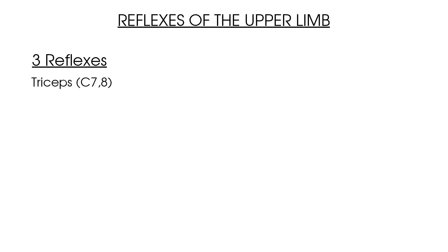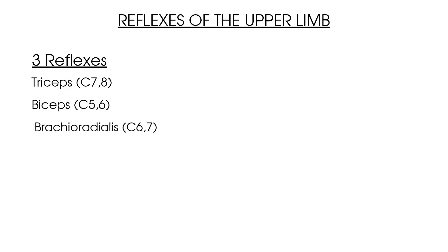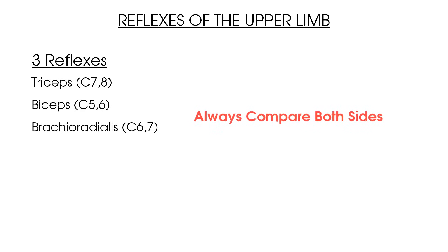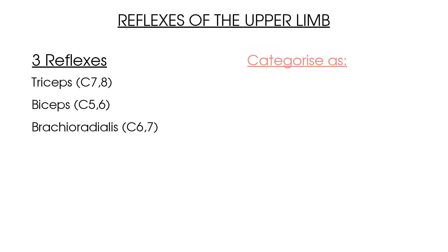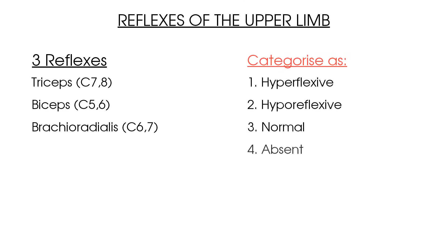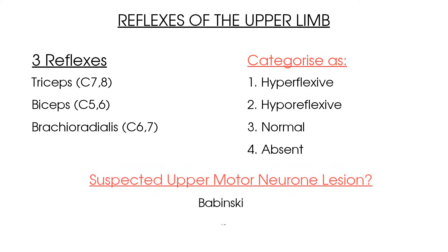To summarise this video on the reflexes of the upper limb, there are three reflexes that you need to test: number one, the triceps reflex, which tests the spinal level C7, C8; number two, the biceps reflex, which tests the spinal level C5, C6; and number three, the brachioradialis reflex, which tests the spinal level C6, C7. Test your patient's reflexes on both sides and categorise them as either hyperreflexive, hyporeflexive, normal, or absent. If your patient presents with more sinister signs that may indicate an upper motor neuron lesion, you should also complete the Babinski and Clonus reflexes, as well as your lumbar spine neurological assessment.